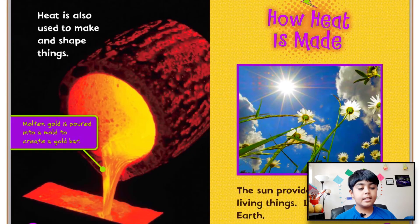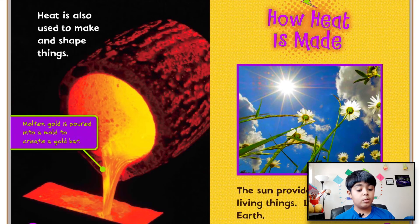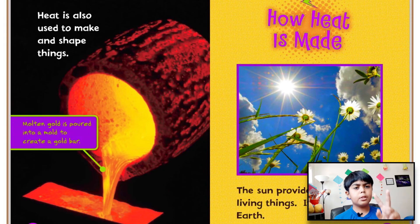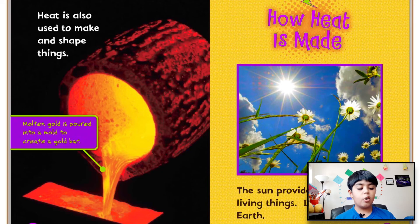Heat is also used to make and shape things — like molten gold poured into a mold to create a gold bar. Chapter two: How heat is made. The sun provides heat for all living things; its energy heats the earth.